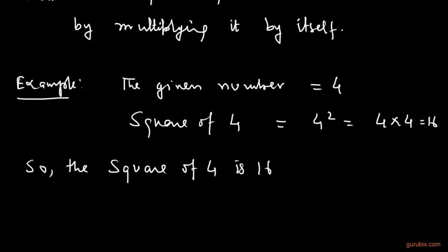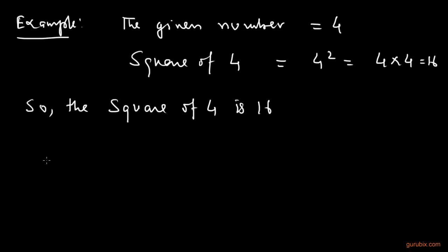We can take more examples. Suppose we have another number 3 and if we calculate the square of 3, it will be 3 × 3 and that will be equal to 9. So we can say that the square of 3 is 9.